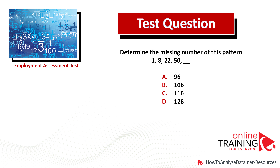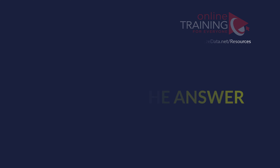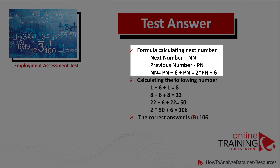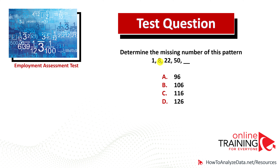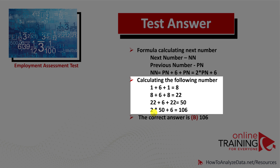Behind any pattern number there is a formula. For the next number we use NN, and for the previous number we use PN. Next number equals previous number plus six plus previous number again, which means next number equals previous number multiplied by two plus six. So: 1 plus 6 plus 1 equals 8; 8 plus 8 equals 16, plus 6 is 22; 22 plus 22 equals 44, plus 6 is 50. The next number would be 2 multiplied by 50, which is 100 plus 6, which equals 106. The correct answer is B.